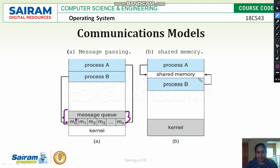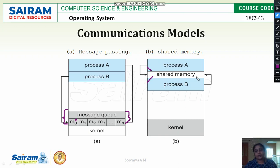In the shared memory model, if two processes are utilizing one memory or using data from each other, a block of memory is allocated between the two processes. The address for that block of memory is given to both process A and process B, which allows them to access the shared memory space in main memory.